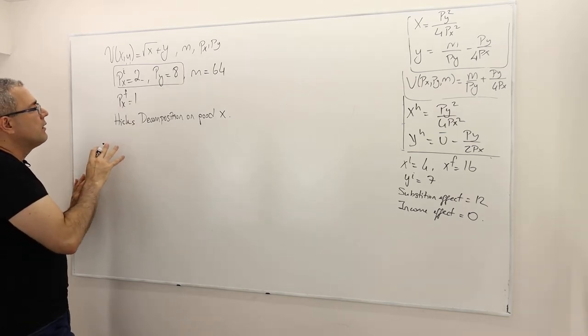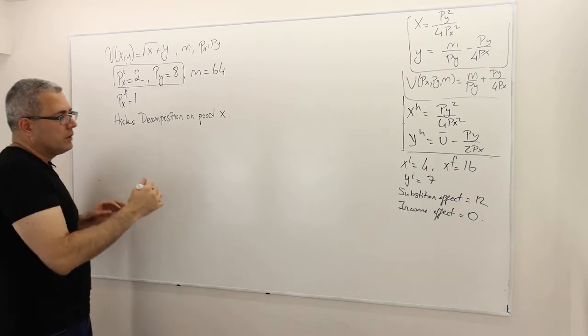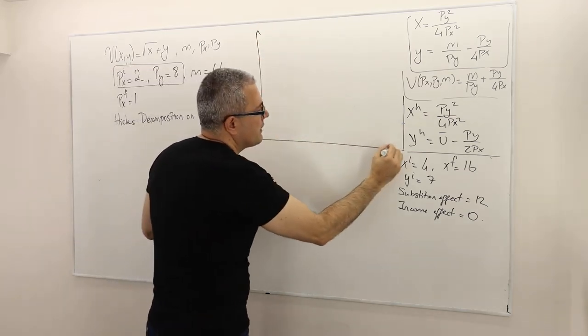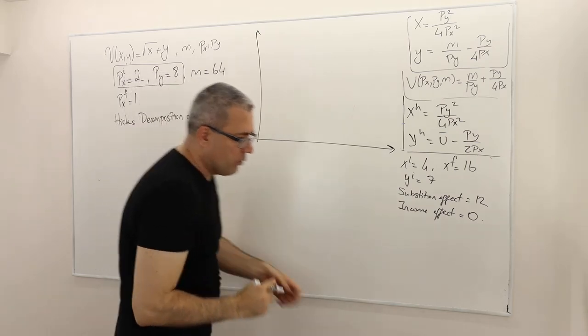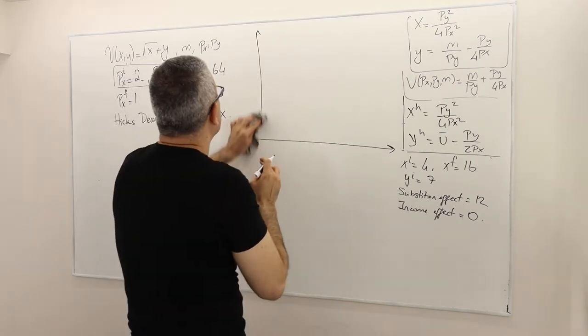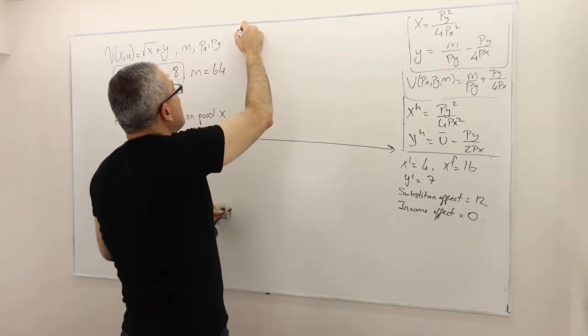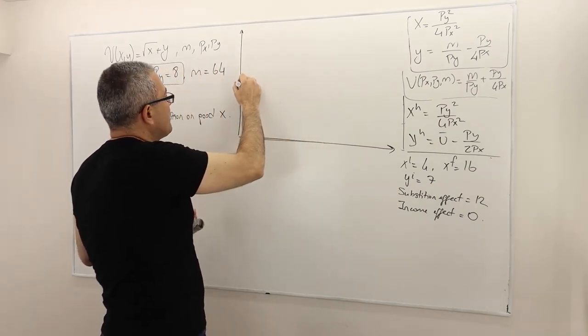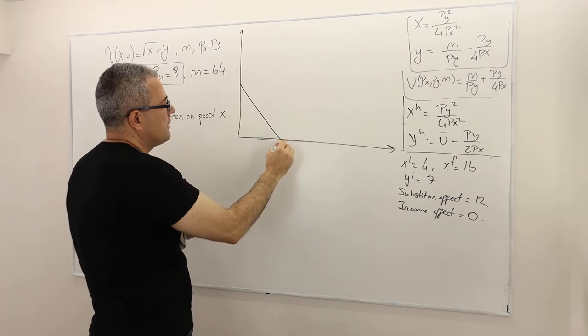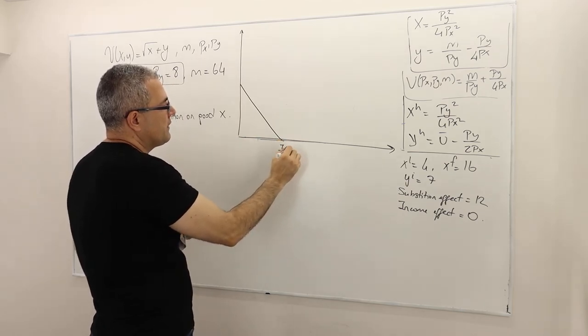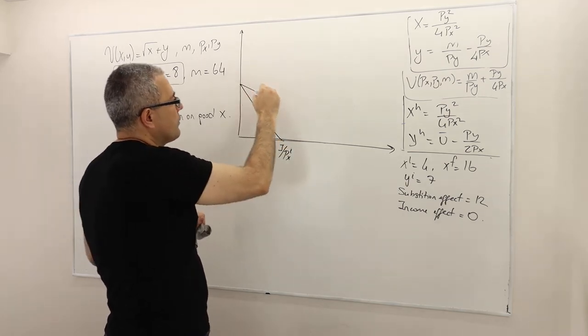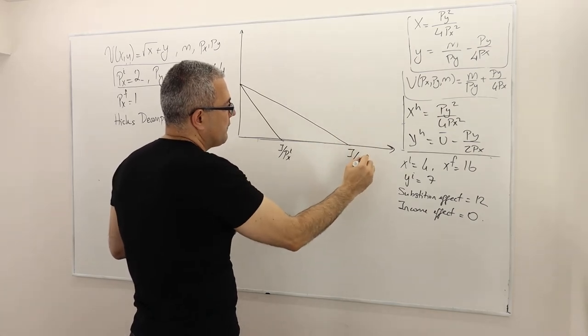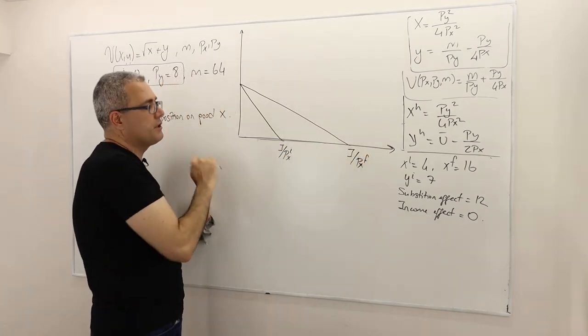All right. So first of all, let's remember the theory of Hicks decomposition. So according to Hicks, once again we have a budget curve. This is income divided by PX initial. And then the price of good X declines, income divided by PX final. So this is the final budget curve.